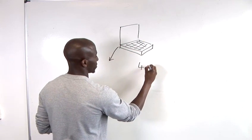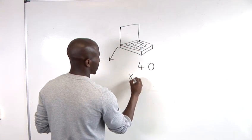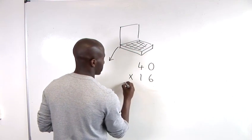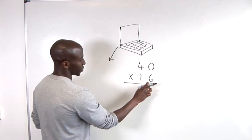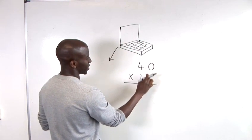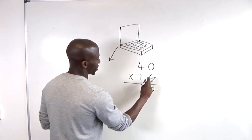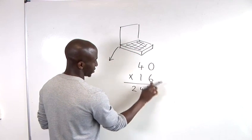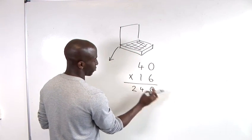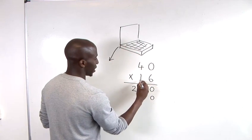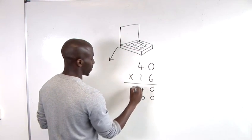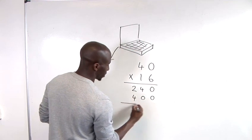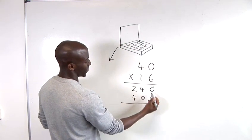We've got 40 multiplied by 16. And what we do first of all, we multiply the 6 by the 0, which is just 0. 6 by 4, we've got 24. We've got a 0 now coming in because this 1 represents 10. 1 times 0 is just 0. 1 times 4 is just 4. So, that's just basically 400 plus 240.